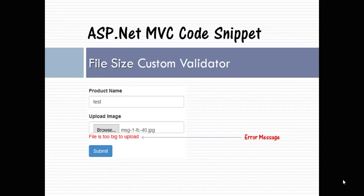Hello friends, welcome to the ASP.NET MVC Core snippet. In this video we are going to see the core snippet for file size custom validator. We are going to develop both a server-side validator as well as a client-side validator. Many times there is a requirement in real applications to check the size of your uploaded file, and if it is beyond the limit, you want to show validation feedback to the user.